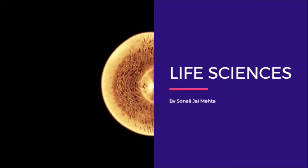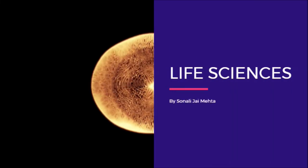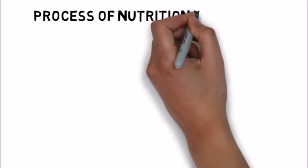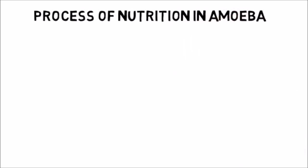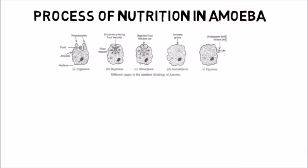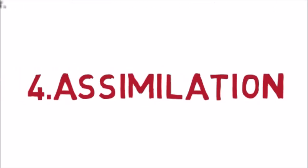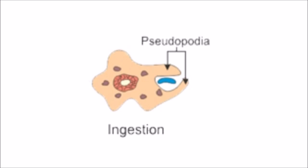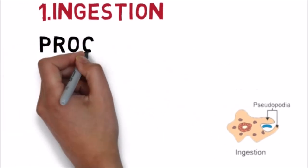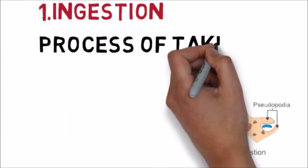Hello friends, in today's class we mainly focus on the topic: nutrition in amoeba. Nutrition in amoeba is mainly divided into five different processes — ingestion, digestion, absorption, assimilation, and egestion. We are starting with the first process: ingestion.